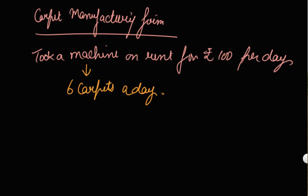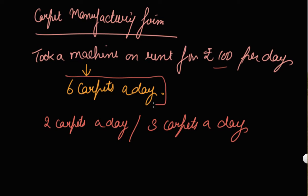If the producer is producing 6 carpets a day, then your 100 rupees per day is worth spending. But if he produces only 2 carpets a day or 3 carpets a day, the machine can produce 6 carpets. But what if the producer is producing 2 carpets or 3 carpets? Then also he has to pay Rs. 100 per day for the machine.